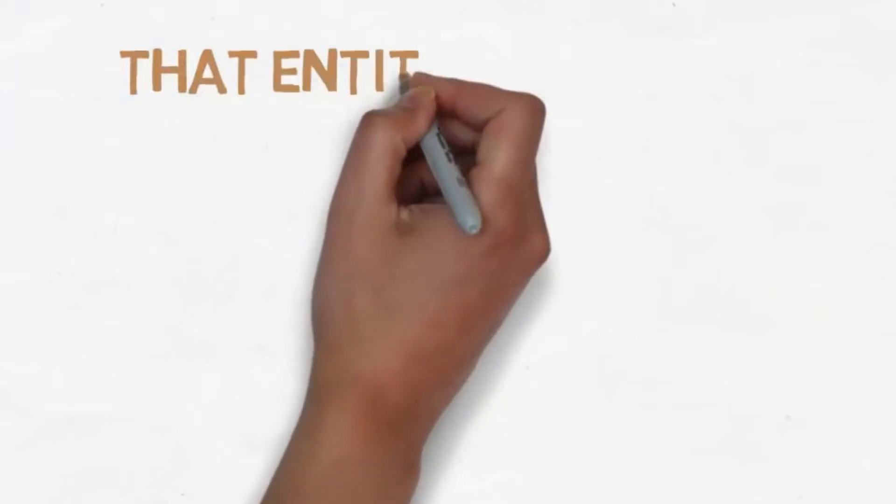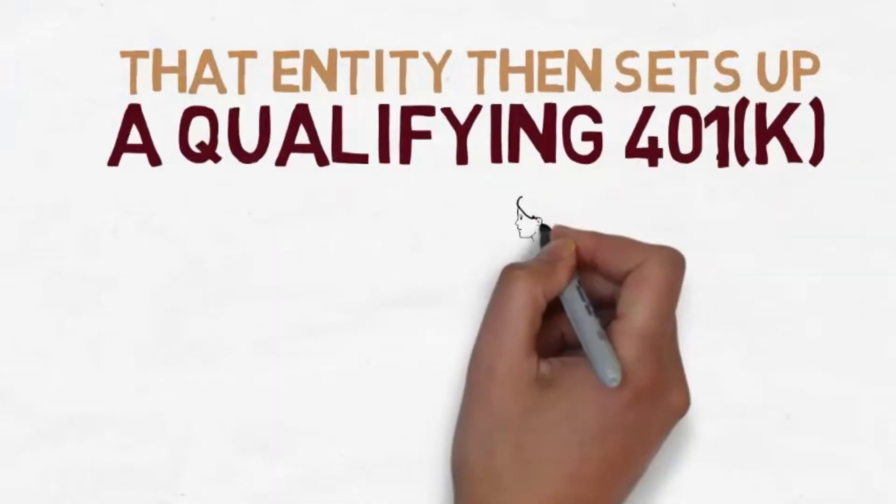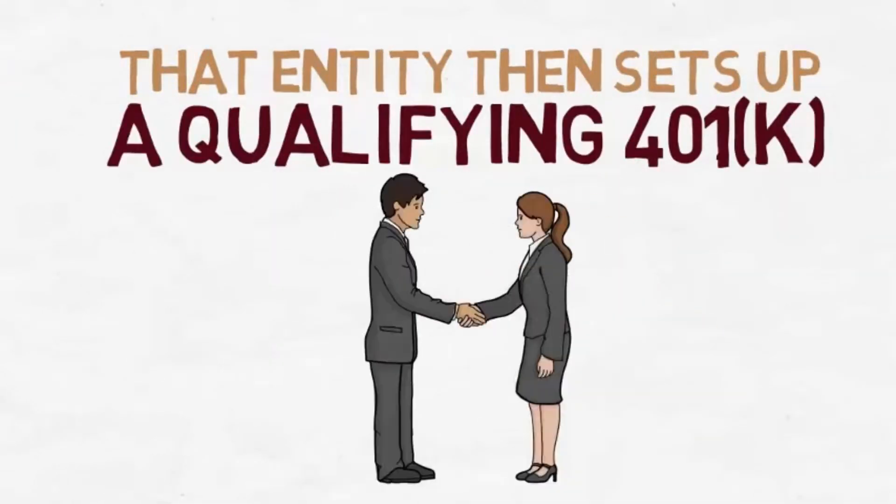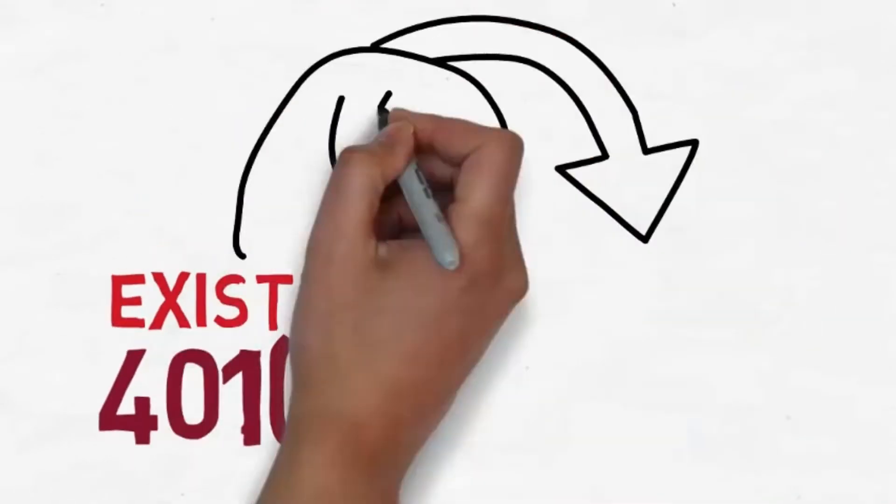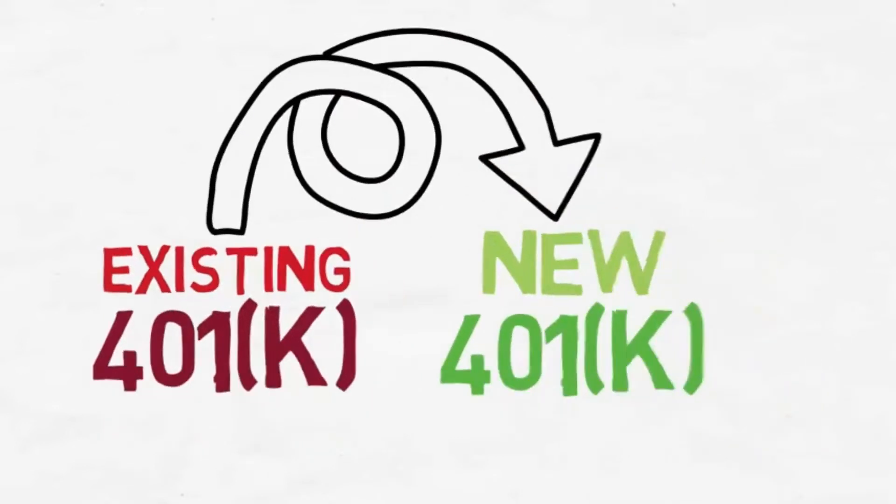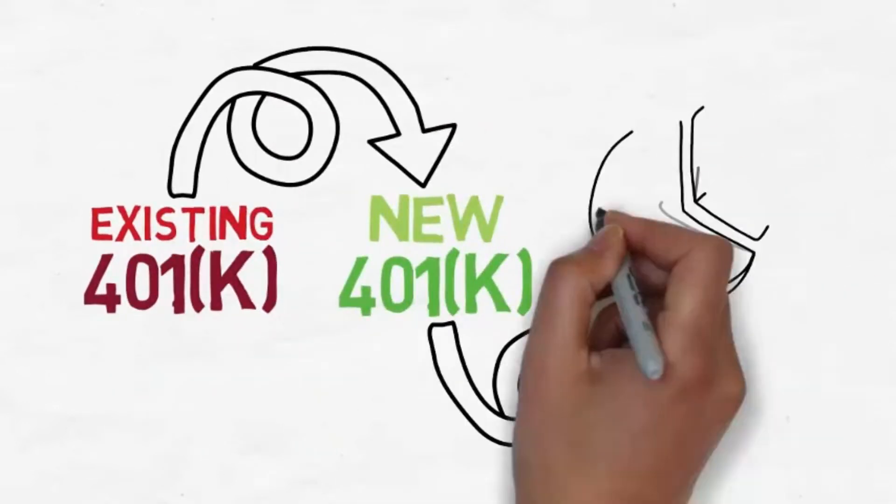That entity then sets up a qualifying 401k plan to accept your investment. After which, the funds from your existing 401k or IRA are rolled over into the new 401k, which then purchases shares in your business.